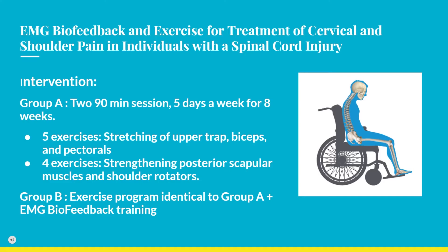Group A attended two 90-minute sessions two weeks apart for one-on-one instructions on a home exercise program using an instruction manual and elastic exercise bands, to be performed once a day a minimum of five days a week for eight weeks. The exercise routine involved five gentle stretching exercises targeting the upper traps, biceps, and pectoral muscles, and four strengthening exercises for the posterior scapular muscles, shoulder rotators, adductors, and extensors. These began with one set of five repetitions at moderate resistance and progressed by increasing sets and band resistance.